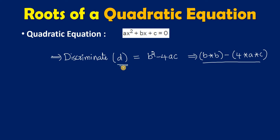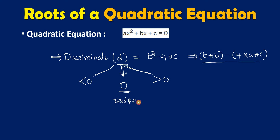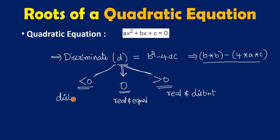We have three possibilities for the value of d. The first possibility is d can be 0, the second is it can be greater than 0, and the third is d can be less than 0. If d equals 0, the roots are real and equal. If d is greater than 0, the roots are real and distinct. If d is less than 0, the roots are distinct and imaginary.